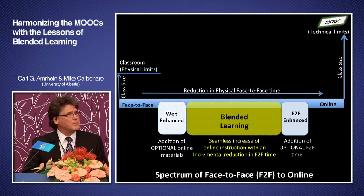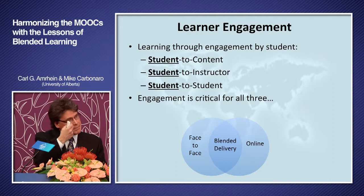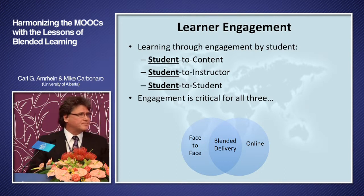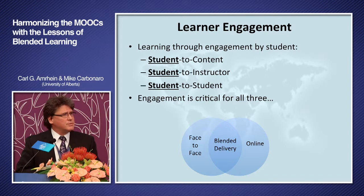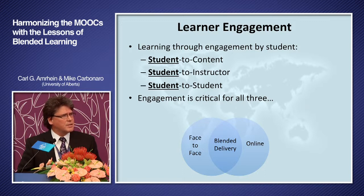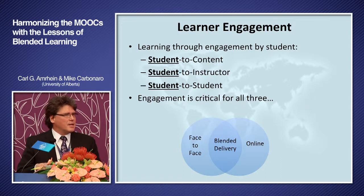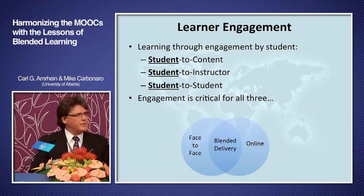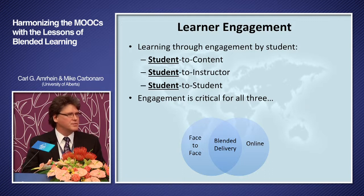A key part of moving in this direction is learner engagement. What we want to do is optimize student interaction: student-to-content, student-to-instructor, and student-to-student interaction. These are critical for all three modes: face-to-face, blended delivery, and online. You can have a course that runs in all three modes, or just one — maybe online only, blended only, or face-to-face only.